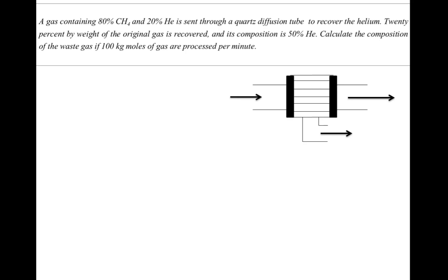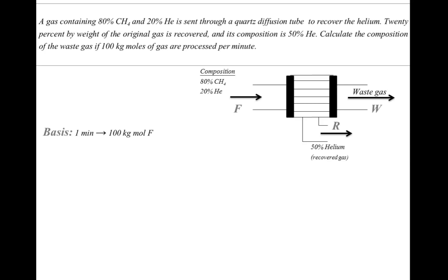The feed value is given and the waste has not been directly given but we will find it. The feed composition is 80% CH4 and 20% helium. The recovered gas composition is 50% helium. Since there are only two components, methane and helium, the remaining 50% of the recovered stream must be methane.